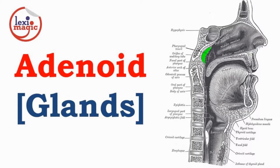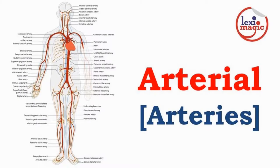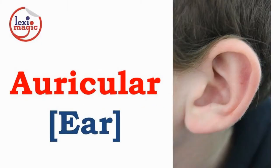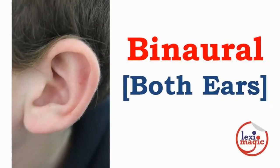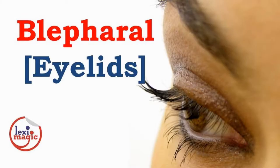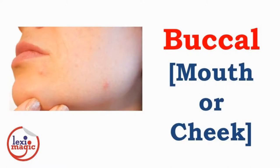Adenoid refers to the glands. Arterial refers to the arteries. Auricular refers to the ears. Binaural refers to both ears. Blepharal refers to the eyelids. Buccal refers to the mouth or cheek.